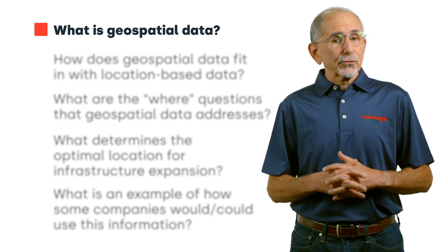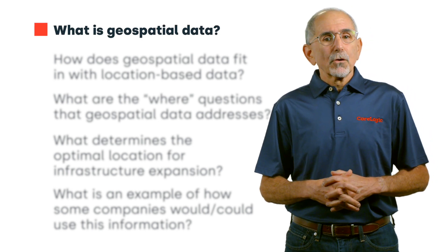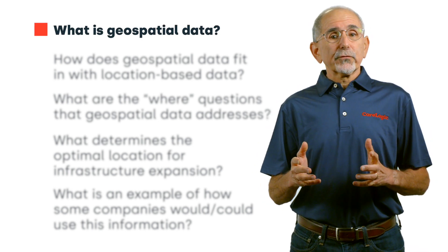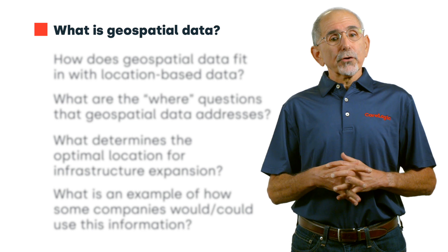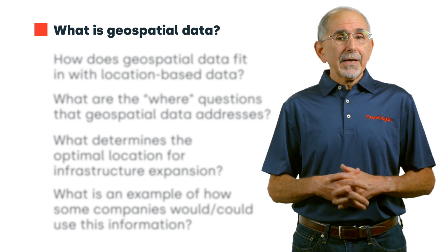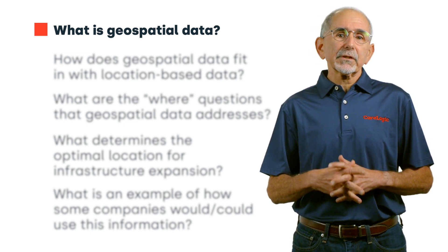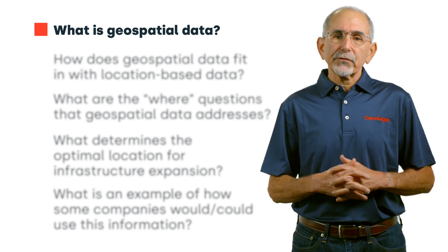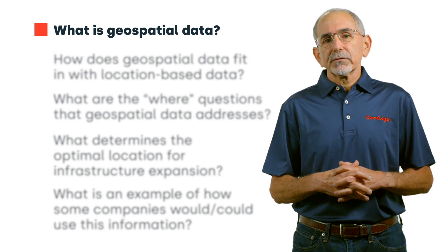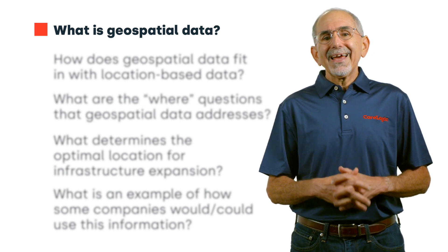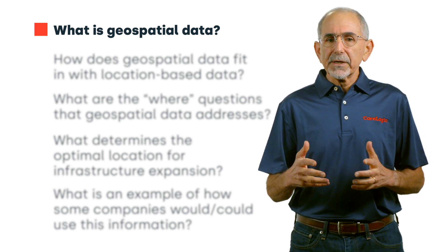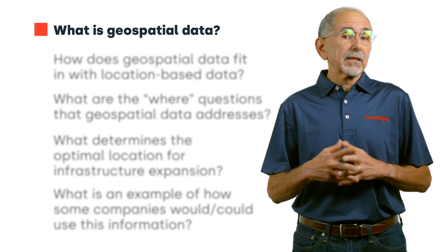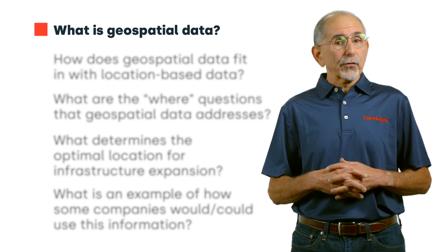What is geospatial data? Let's start with the basics. Geo refers to a place on the Earth's surface and spatial refers to the relationship between objects, so geospatial is the relationship and the proximity between people, places, and things on the Earth's surface.